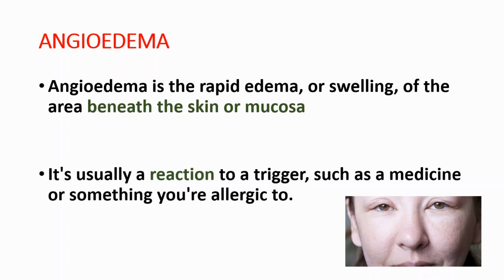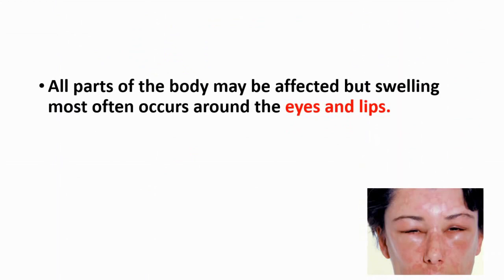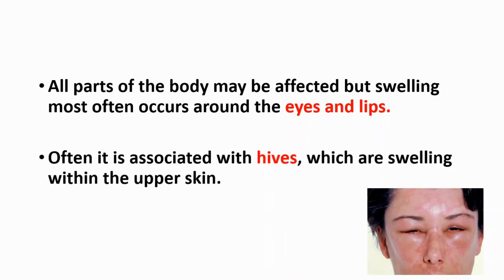It could be pollens, it could be mold, or something else. All parts of the body may be affected, but swelling most often occurs around the eyes and lips. Often it is associated with hives, which are swelling within the upper skin. Hives and angioedema are different — hives affect only the upper skin, which is not the same as angioedema, which affects deeper layers.